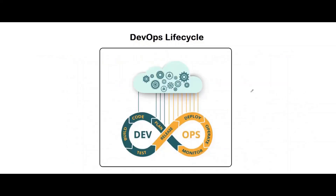Now let's move to the DevOps lifecycle. As you can see the infinity symbol, it indicates that it is a continuous process. The DevOps lifecycle contains various phases: plan, code, build, test, release, deploy, operate, and monitor. Now let's discuss these DevOps phases one by one.